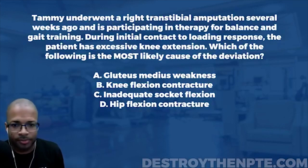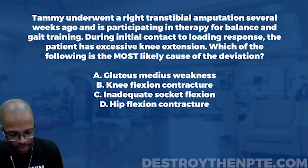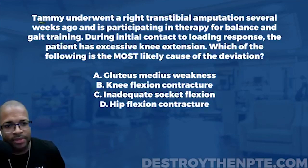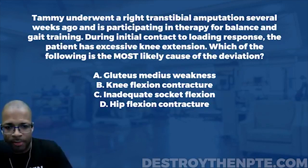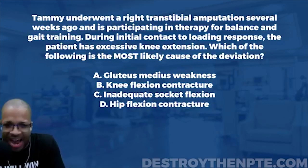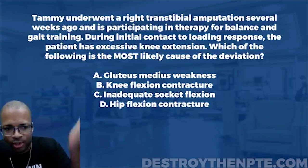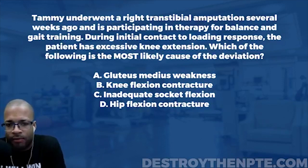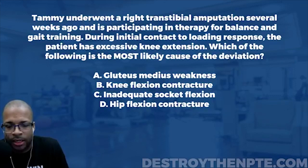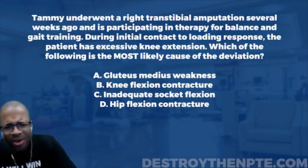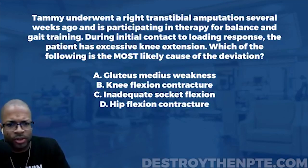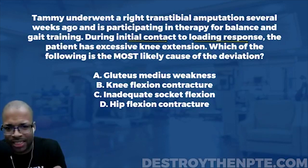Tammy underwent a right transtibial amputation — below the knee — several weeks ago and is now participating in therapy for balance and gait training. She's lost part of her right limb and is coming to us for balance and gait training, typically using some level of prosthesis. The question is asking about initial contact to loading response and excessive knee extension.